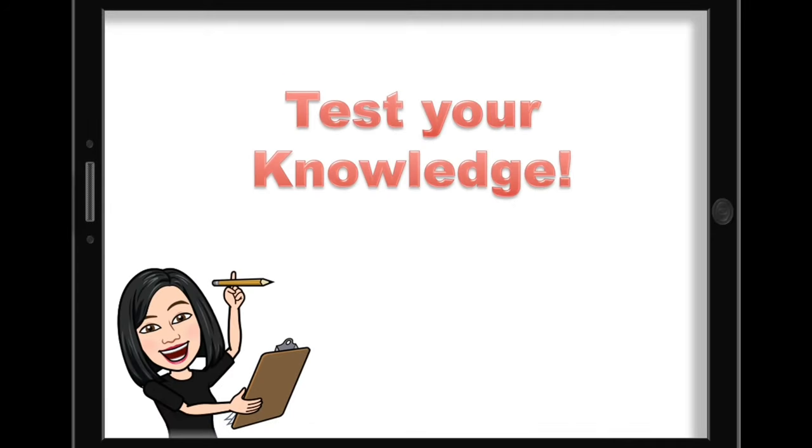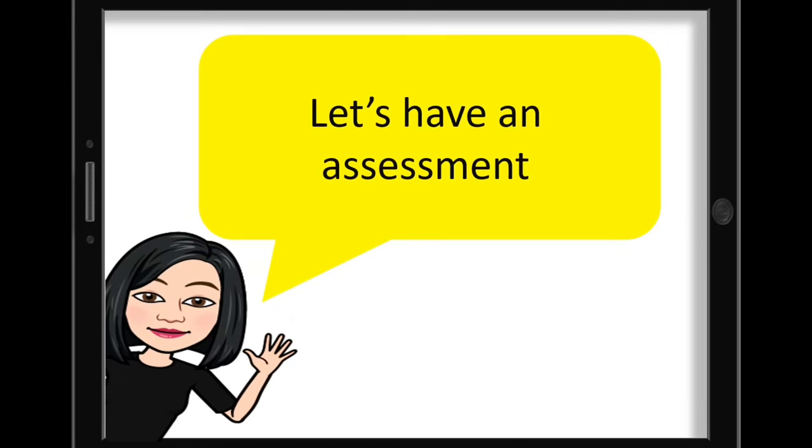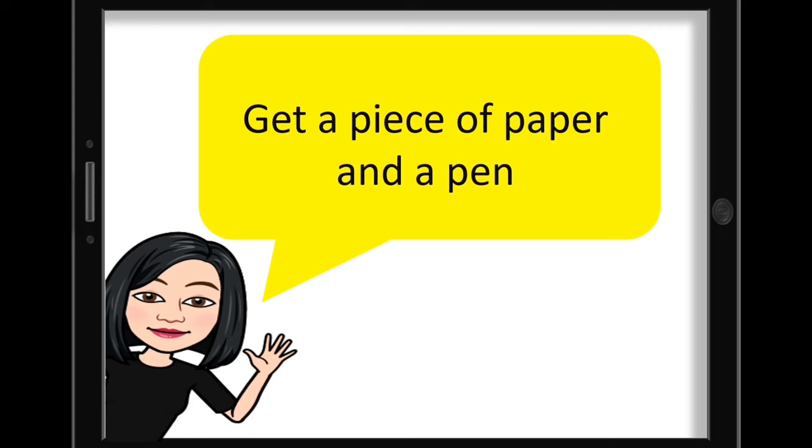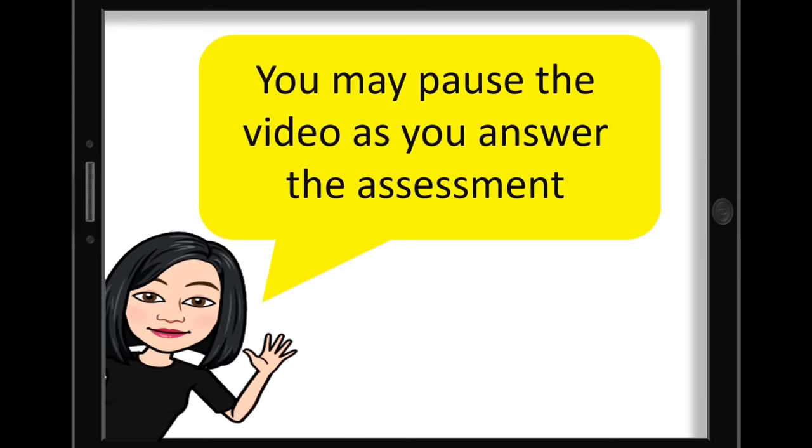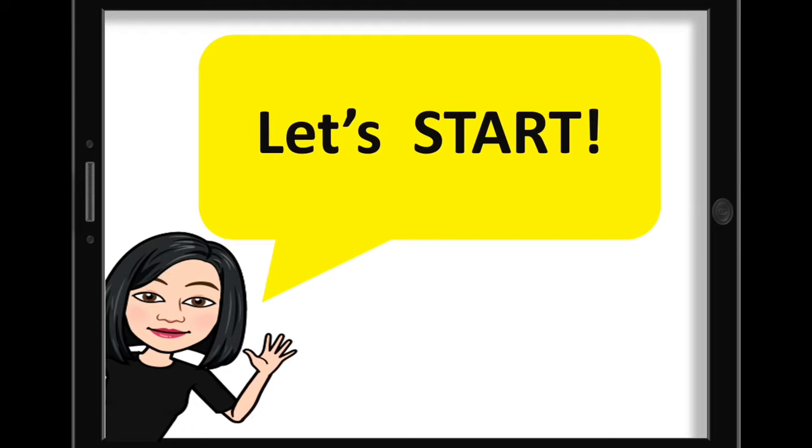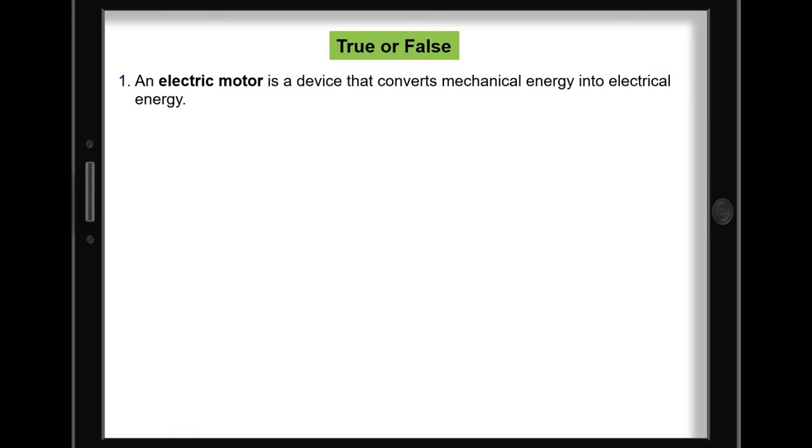Let's test your knowledge about our lesson. Let's have an assessment. Get a piece of paper and a pen. You may pause the video as you answer the assessment. Let's start. True or false: Write true if the statement is correct and false if it's incorrect. 1. An electric motor is a device that converts mechanical energy into electrical energy.